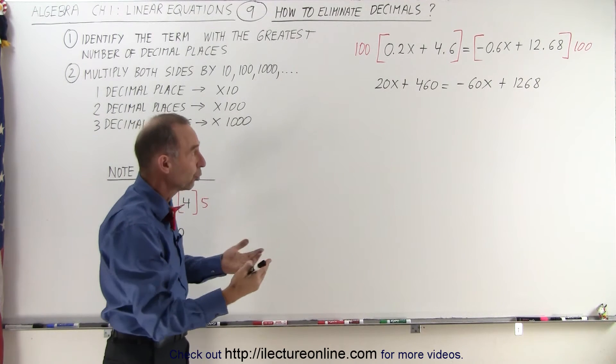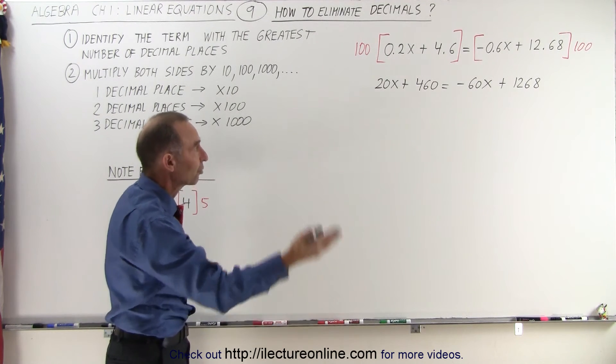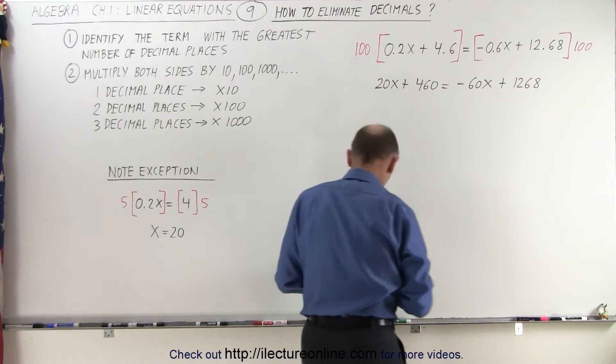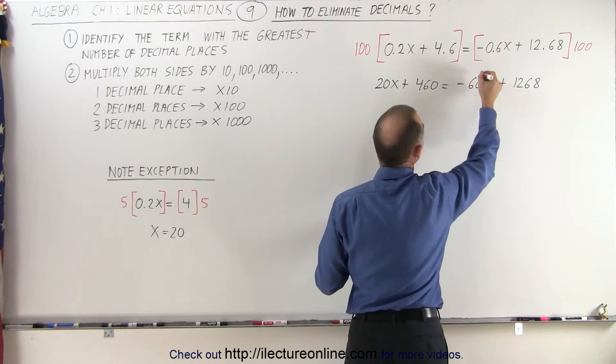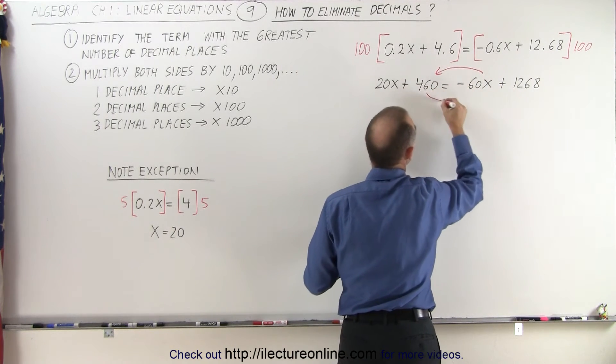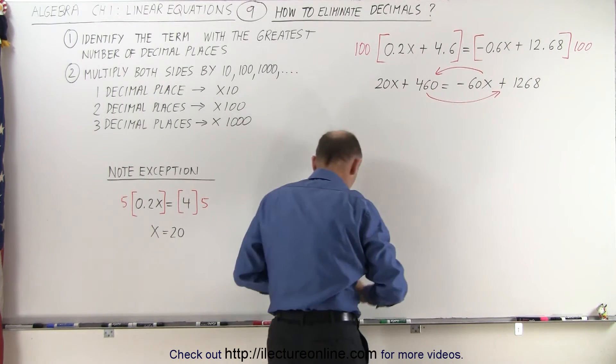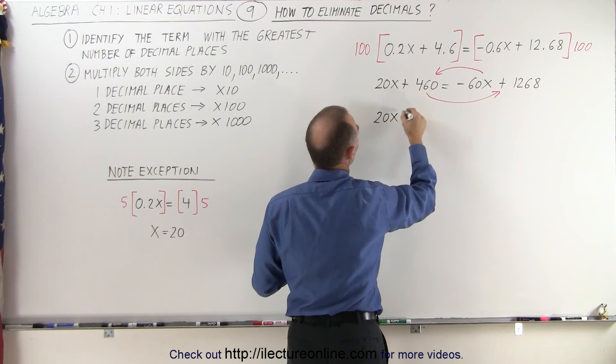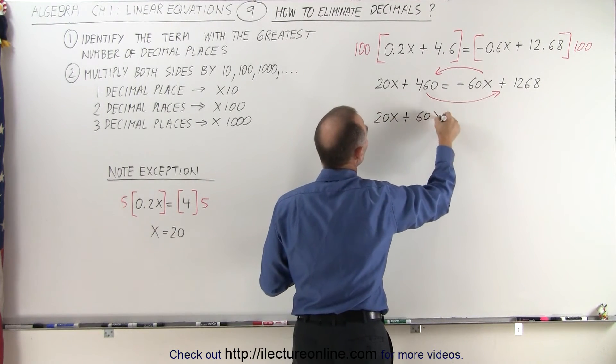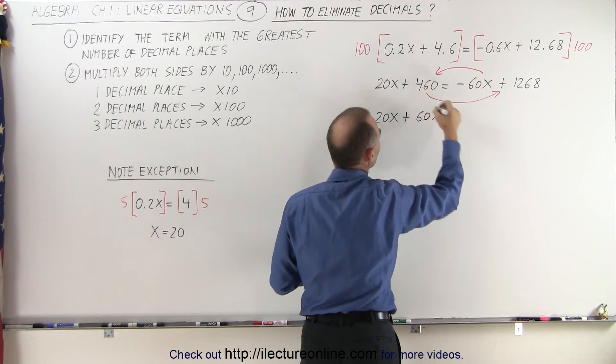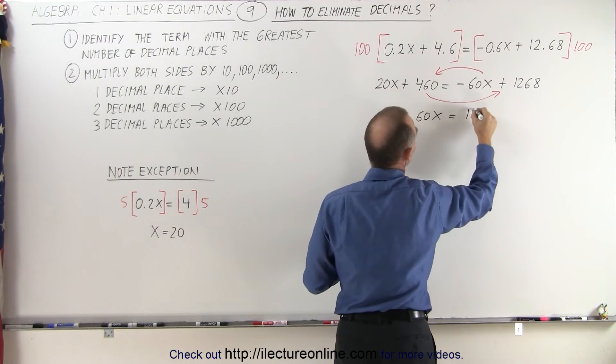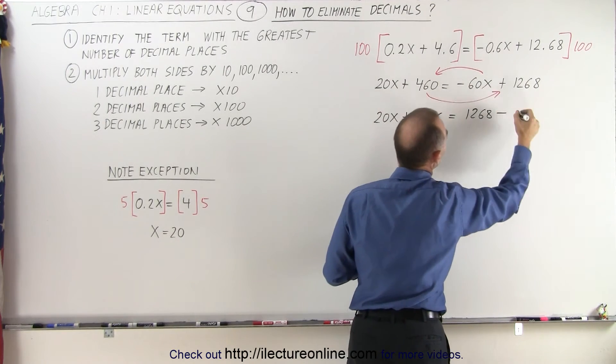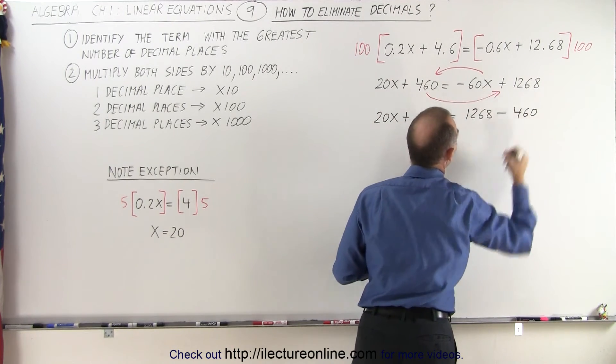Then we would follow the next rules, where we move all the terms with an x to one side, and all the other terms to the right side. In other words, we're going to move the minus 60x to the left, and the 460 to the right. When we do that, we get the following. We get 20x plus 60x, because the negative 60 becomes plus 60, is equal to 1,268 minus, because it's plus on this side, it becomes minus 460.